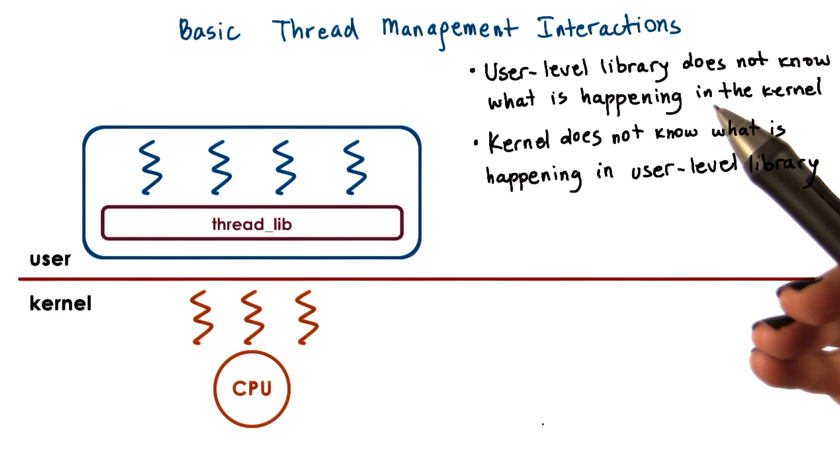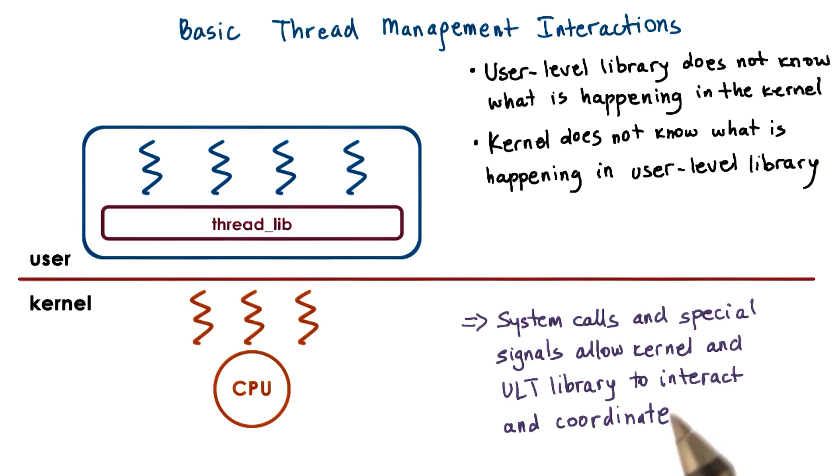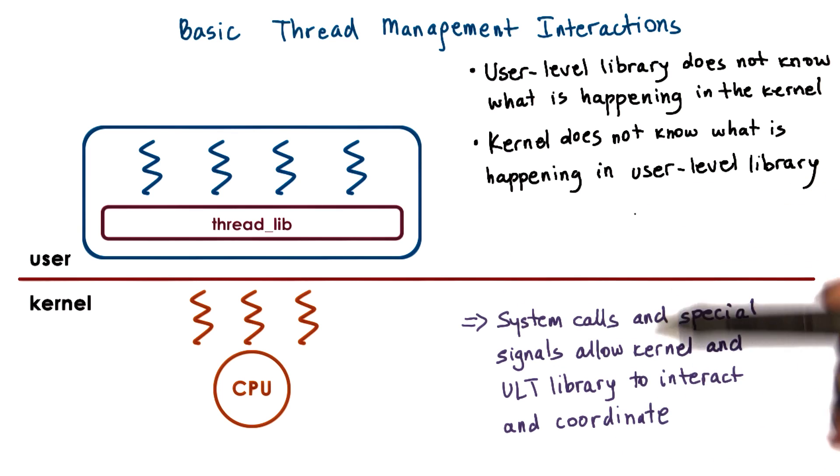Through these examples, we see that the user-level library doesn't know what's happening in the kernel, and the kernel doesn't know what's happening at the user level. Both facts cause problems. To address these issues, the Solaris threading implementation introduces system calls and special signals to pass information between the two layers. This is how kernel-level and user-level thread management interact and coordinate.